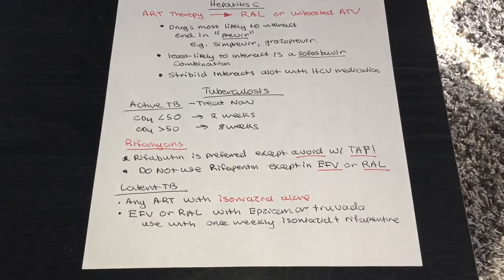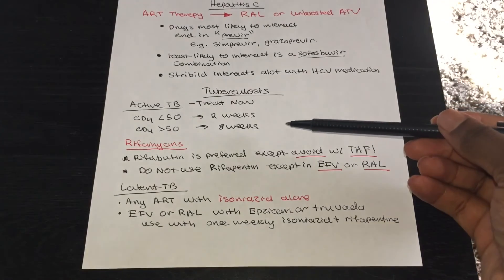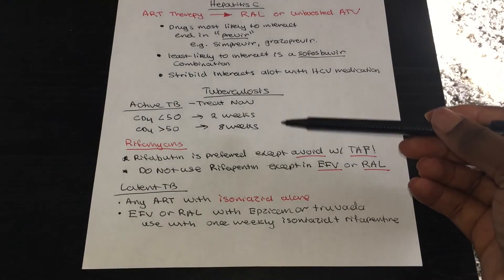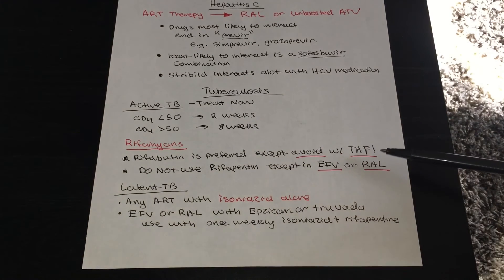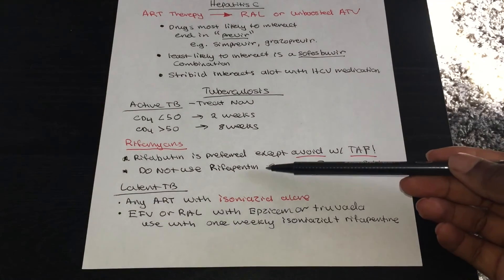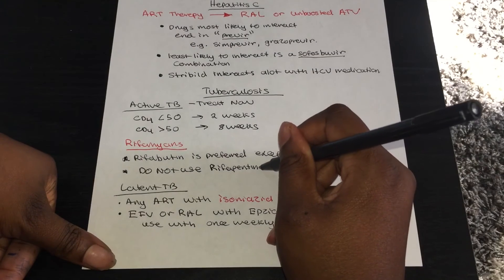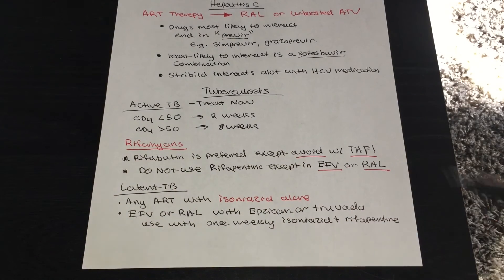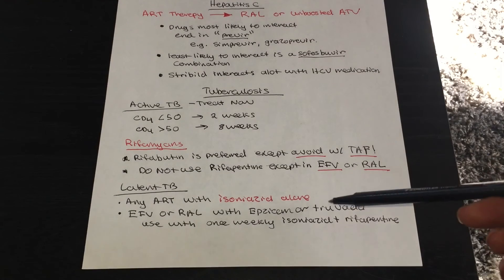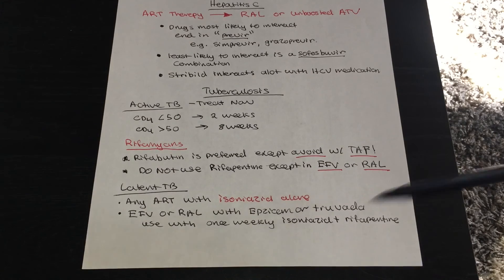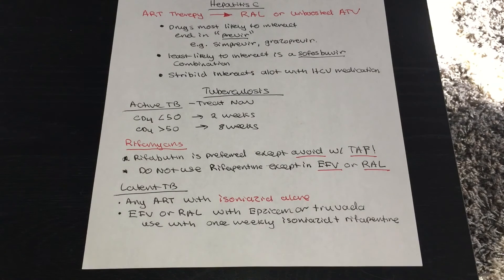For active tuberculosis, treat immediately or as soon as possible. If CD4 count is less than 50, treat within two weeks; if greater than 50, treat within eight weeks. Among rifamycins, rifabutin is the preferred agent within TB treatment, but avoid it with the prodrug version of tenofovir. Do not use rifapentine — the only exception is when given with efavirenz or raltegravir. For latent TB, any antiretroviral agent can be used with isoniazid alone. If using rifapentine, only efavirenz or raltegravir is permitted, and ensure combination with either Epzicom or Truvada.